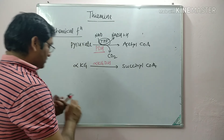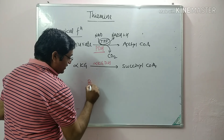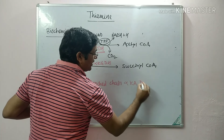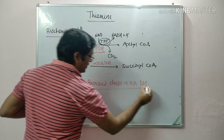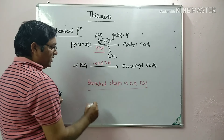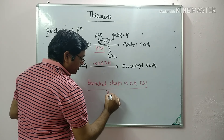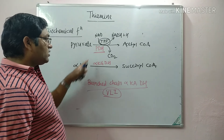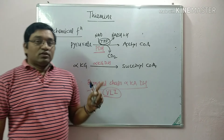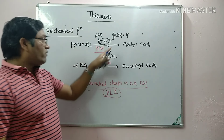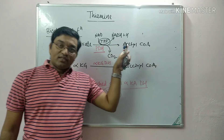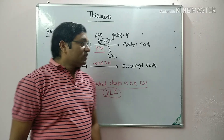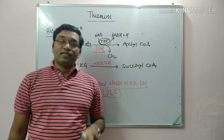Another important reaction is the branched-chain alpha-keto acid dehydrogenase reaction, which is involved in the metabolism of branched-chain amino acids — valine, leucine, and isoleucine. These three reactions are responsible for generation of NADH, which then enters the electron transport chain and is responsible for generation of ATP. In this way, thiamine is useful in energy generation.